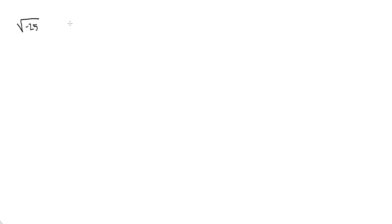Let's take a look at the example: what is the square root of negative 25? As we've talked about in a previous video, the easiest way to figure out roots is to prime factorize everything underneath the radical. So under the radical, we have negative 1 times 5 times 5, and we know we can pull out a 5 here.